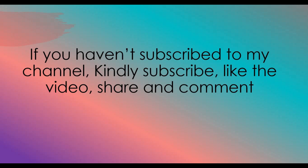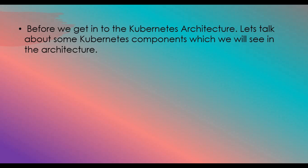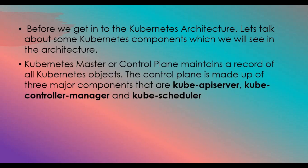In Kubernetes architecture there are a lot of components. Let's start with some of the key components. When a Kubernetes architecture is presented, there are two major things: one is the Kubernetes master or control plane, and the other is worker nodes. The master or control plane maintains the record of all Kubernetes objects — similar to how in Docker Swarm the master controls how containers and services are created and nodes are managed.